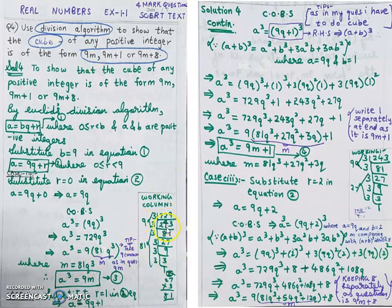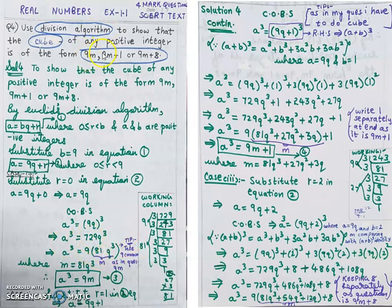By prime factorization, 729 = 9 × 81. So a³ = 9 × 81q³. Taking 9 common and assuming 81q³ = m, we get a³ = 9m. Case 1 is proved.